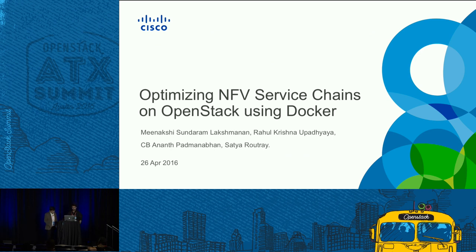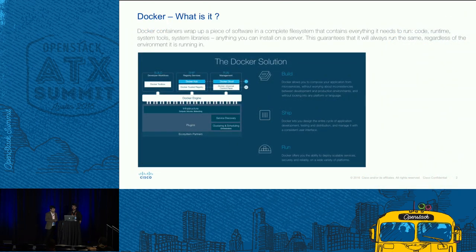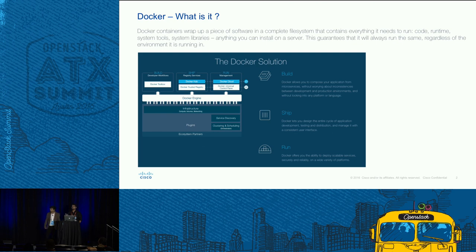This is the idea we came up with: running NFV service chains on Docker containers as against running on virtual machines. Before we get into details, I'll give a quick intro for people who are new to this. Docker is a piece of software that helps you wrap your software along with its dependencies and binaries into a single file system along with the runtimes, so that it runs the same anywhere you run it. The dependency problems and version problems are all gotten rid of.